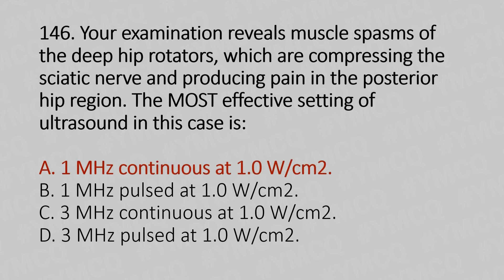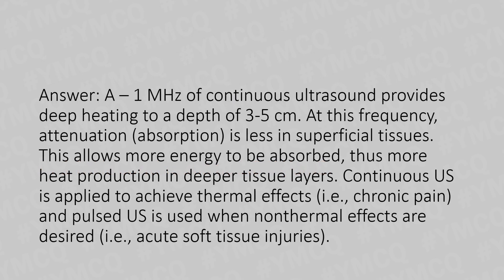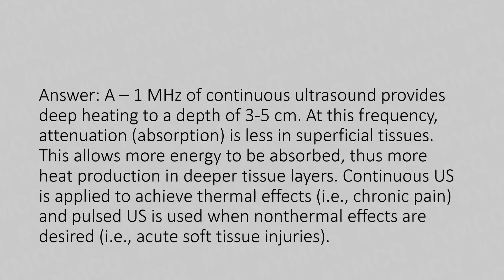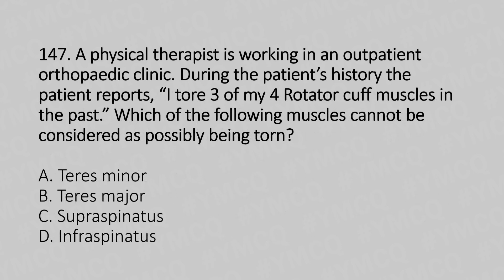The explanation to this question is: 1 MHz continuous ultrasound provides deep heating to a depth of 3 to 5 centimeters. At this frequency, attenuation and absorption is less in superficial tissue, allowing more energy to be absorbed and more heat production in the deeper tissue layers. Continuous ultrasound is applied to achieve thermal effects, used in chronic pain, while pulsed ultrasound is used when no thermal effects are desired, such as in acute soft tissue injuries.